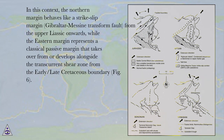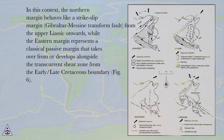In this context, the Northern Margin behaves like a strike-slip margin, Gibraltar-Messene transform fault, from the Upper Liasic onwards, while the Eastern Margin represents a classical passive margin that takes over from or develops alongside the transcurrent shear zone from the early/late Cretaceous boundary, Figure 6.